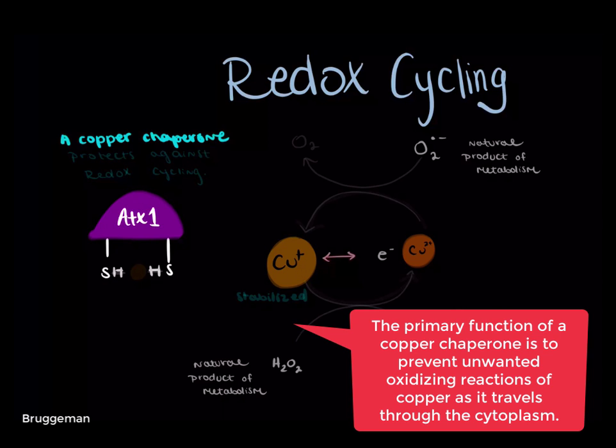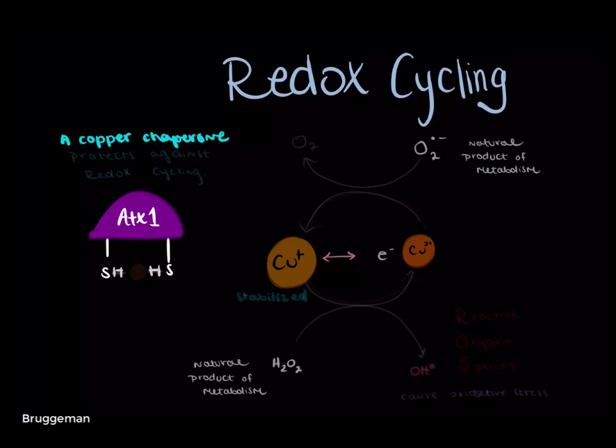Unwanted redox cycling of copper causes a chain of aberrant chemical reactions that occur in the cell when unregulated copper 1 interacts with oxidative species and produces copper 2 and reactive oxygen species, or ROS.